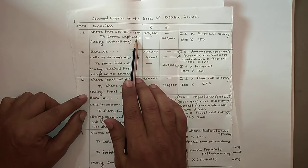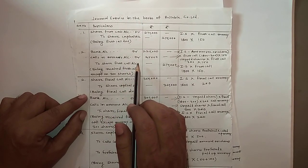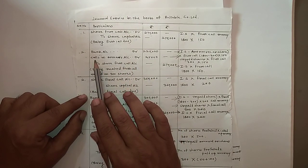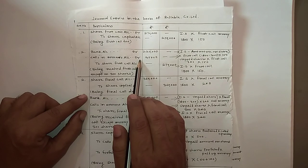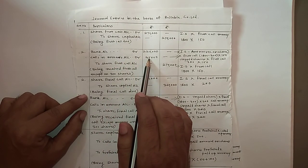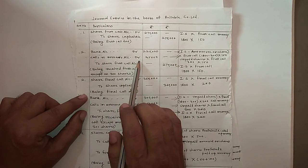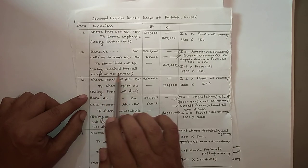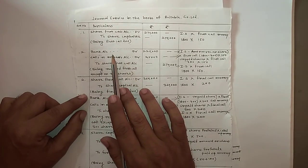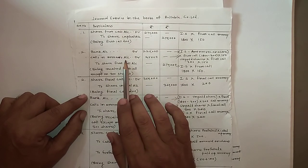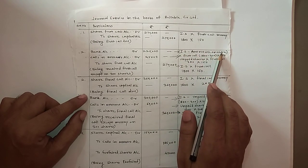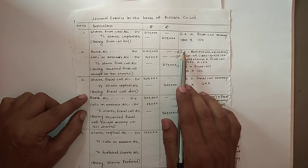The second entry is for receiving the first call money, where there is a call scenario. Bank Account debit and Calls in Arrears Account debit, to Share First Call Account — being first call received except on 300 shares, because the shareholder did not pay the first call. The bank amount is calculated as: issued shares minus unpaid shares, multiplied by first call money — that is (1800 minus 300) into rupees 150.